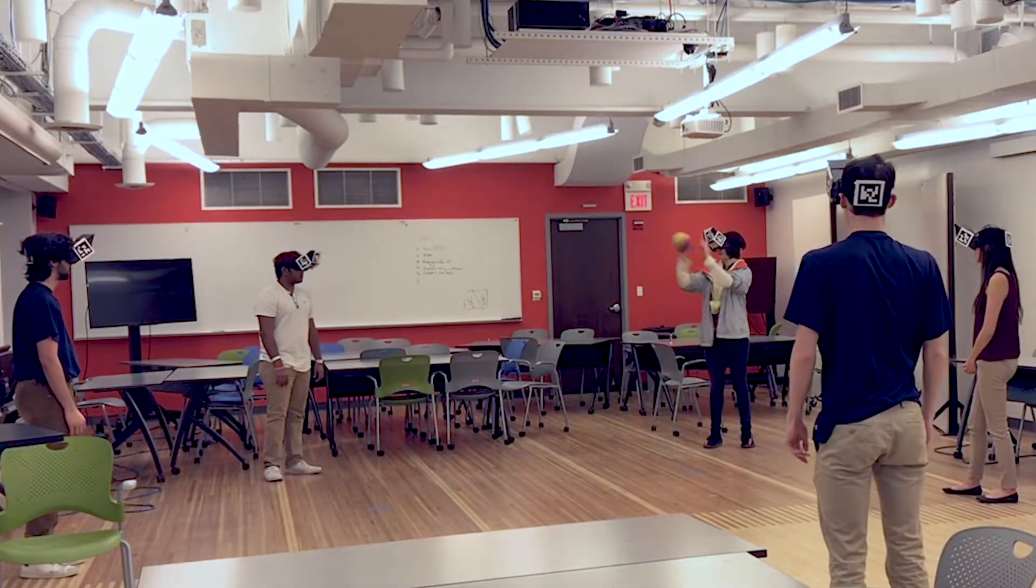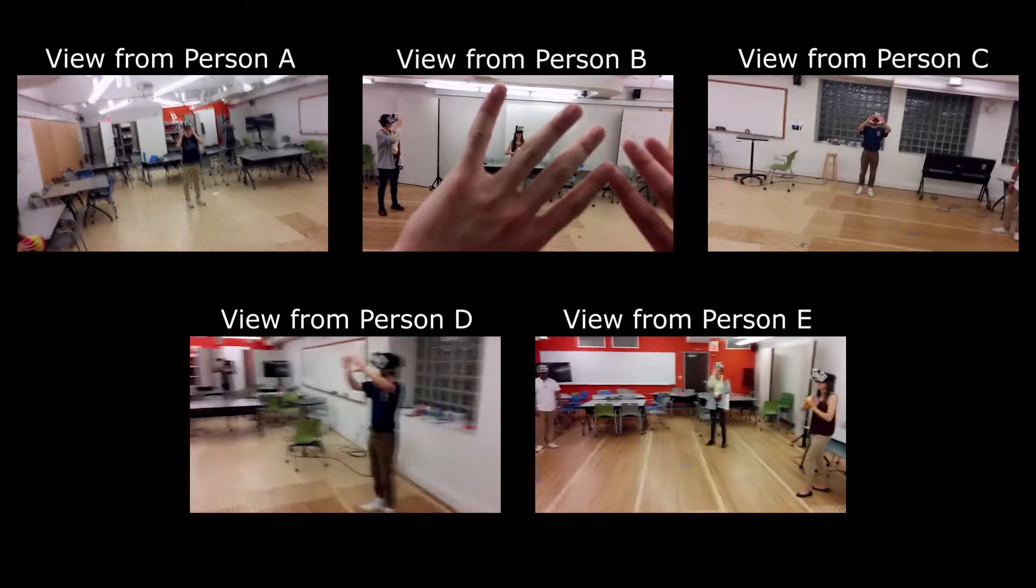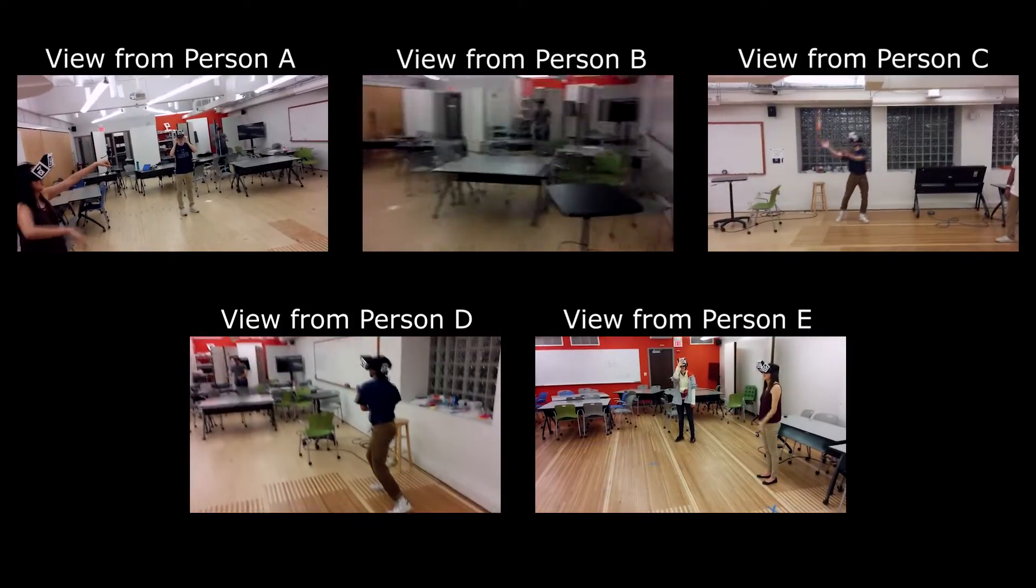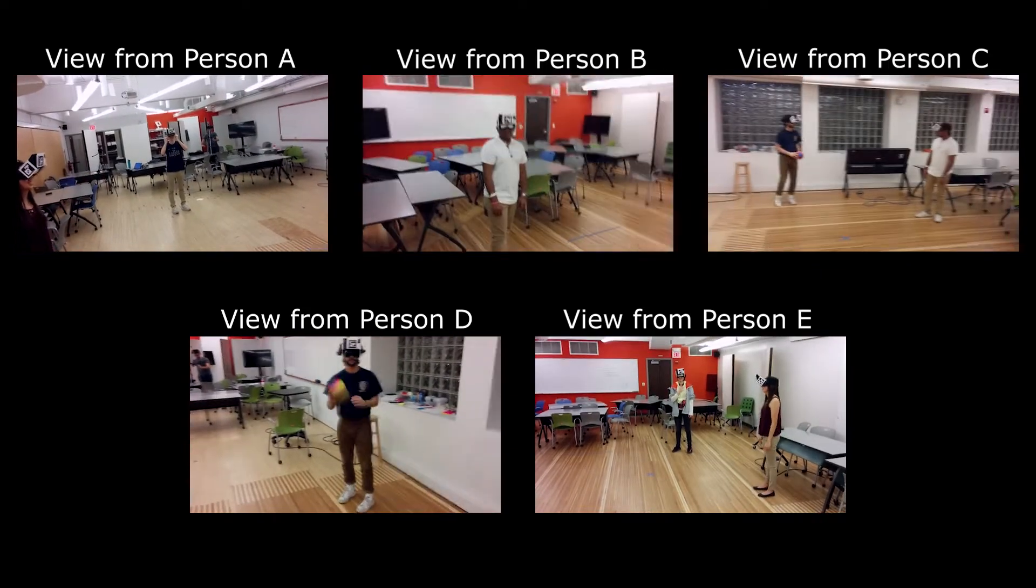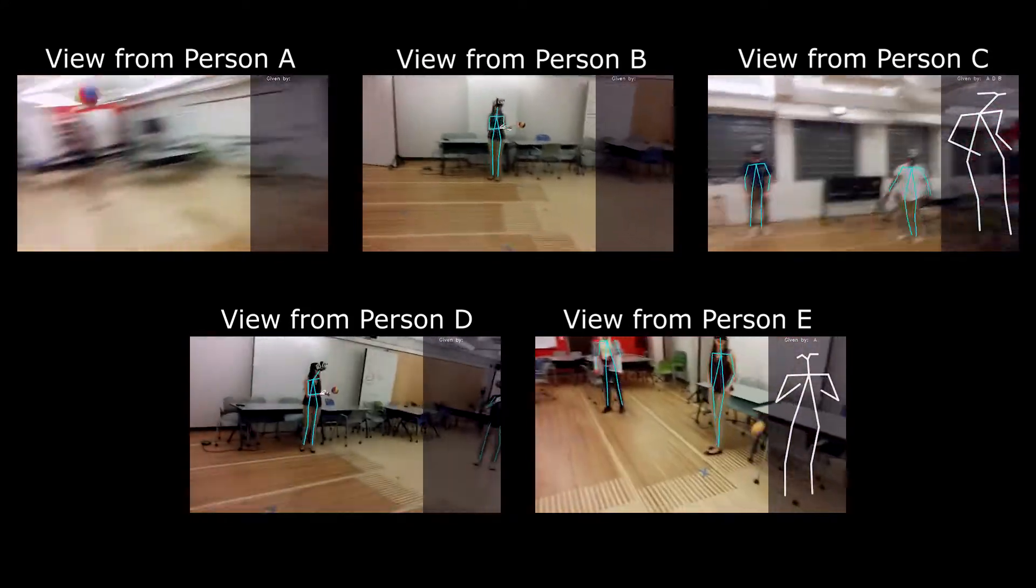In this example scene, five users are playing a head-worn AR ball game. Users look around, providing transient views of one another, and motion blur is also introduced. Body Slam fuses data from all participants' views to opportunistically digitize bodies.